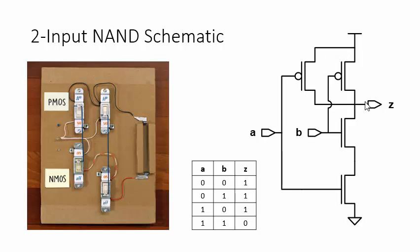A three-input NAND would be three PMOS transistors connected in parallel and three NMOS transistors connected in series. In fact, you can implement any simple logic function by similarly connecting a network of PMOS and NMOS transistors.